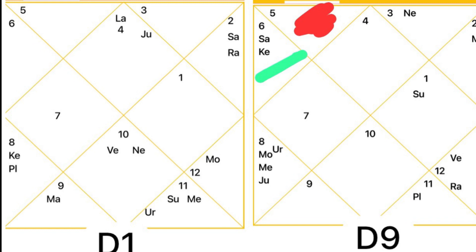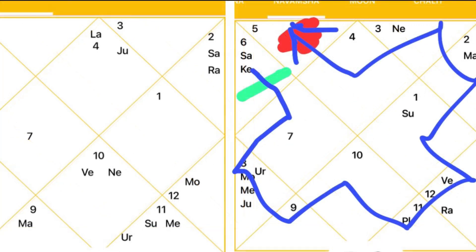If there is no planet — like here in Leo there is no planet — then we look at the lord of that sign, which is the Sun. So finally we can determine that Lord Ram is the Isht Devta. I have made a marker to make it easier: you count 12 from Saturn in the D9 chart and that tells you about the Isht Devta.